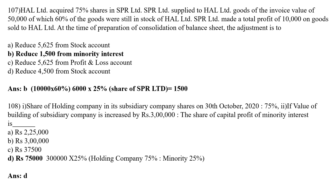MCQ number 108: The share of holding company in its subsidiary company is 75% (as on 38 October 2020). If the value of building of the subsidiary company is increased by 3 lakh, the share of capital profit of minority interest — since holding company interest is 75%, the remaining 25% belongs to minority interest. So 3 lakh × 25% = 75,000. Therefore, the share of capital profit of minority interest is 75,000.